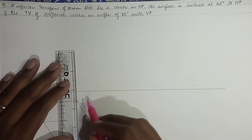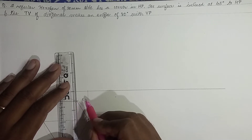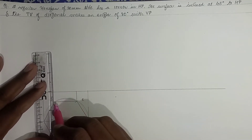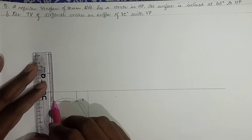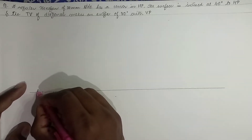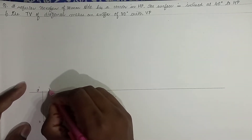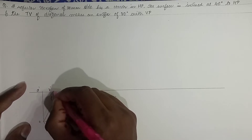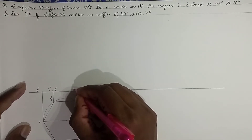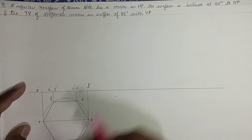Projectors need to be perpendicular to line XY. In the front view it will be A dash, B dash, F dash, C dash, E dash, and D dash.